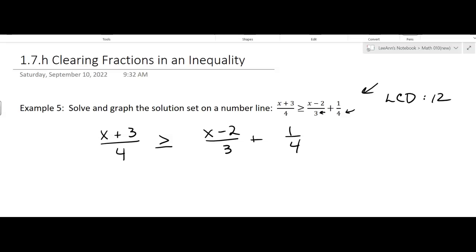That means I'm going to be multiplying by 12. Okay, that will clear the fractions, and then I'll have integers, and I'll like it better. Okay, so I'm going to say 4 goes into 12 three times, 3 goes into 12 four times, and 4 goes into 12 three times.